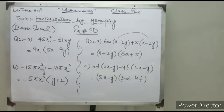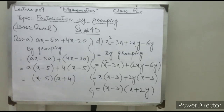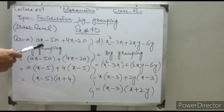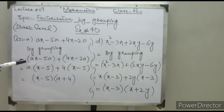So finally we have (5x minus y)(3d minus 4f). In question number 3, every question has four terms. In part A we have: ax minus 5a plus 4x minus 20. By grouping, the first two terms make one group and the last two terms make the second group.